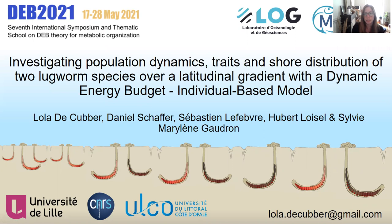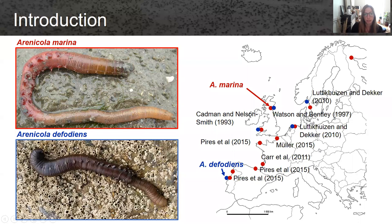I will present how we use the dynamic energy budget individual-based model to investigate the population dynamics. The two species we are studying are Arenicola marina and Arenicola defodians. They live on the sandy to muddy shores from Portugal to Norway, and they can be present on the same beaches or not, depending on the beach.